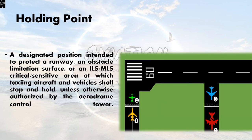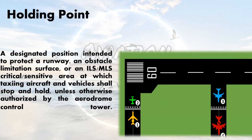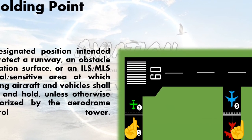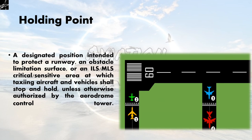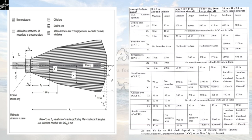Here I am emphasizing on the holding point, because the holding point is defined by reference to the localizer. A holding point is a designated position intended to protect a runway, an obstacle limitation surface, or an ILS/MLS critical and sensitive area, at which taxiing aircraft and vehicles shall stop and hold unless otherwise authorized by the aerodrome control tower.